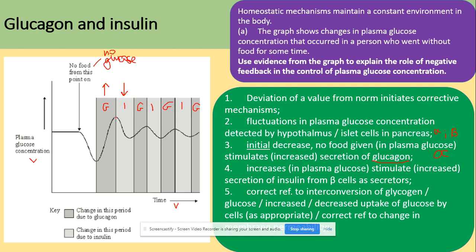The initial decrease will be recognised by the cells because no food is given. Alpha cells detect the change and secrete glucagon, which undergoes processes such as the hydrolysis of glycogen to glucose, increasing glucose concentration. That increase is then detected by beta cells, which secrete insulin to decrease the glucose concentration. These changes bring the corrective mechanism — our negative feedback.